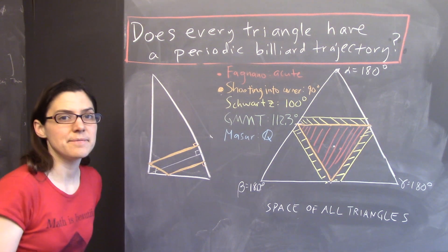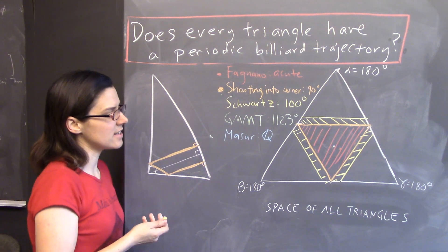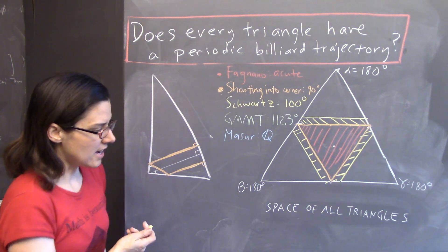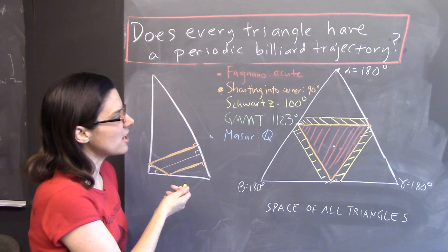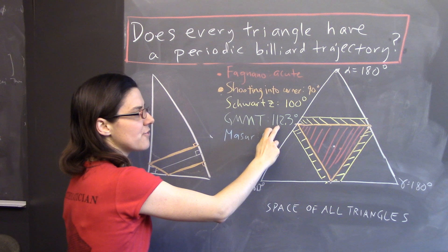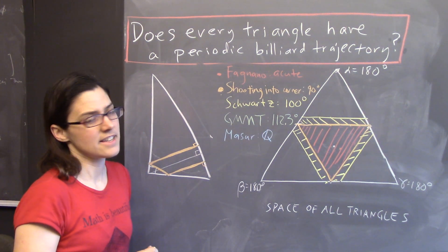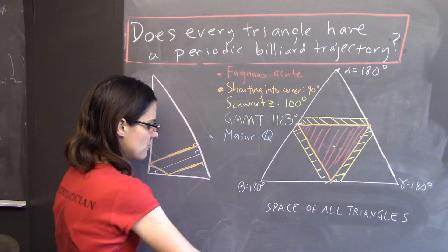Well, that's pretty good. And then, a recent development, just in the end of last year, in August 2018, four authors, Garber, Marinov, Moore, and Tokarski, proved that, in fact, every triangle whose largest angle is less than 112.3 degrees has a periodic billiard trajectory.